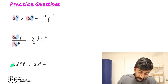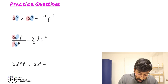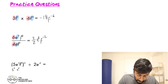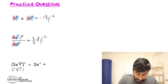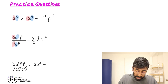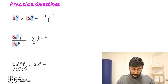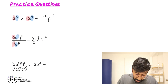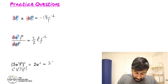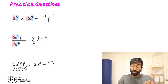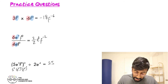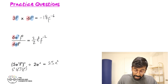So we'll have 5 squared, then E cubed all squared, and then F to the 9 also squared. Work these out individually: 5 squared is 25. Then multiply the powers — the 3 and the 2 — so E to the power of 6. And then F to the power of 18.